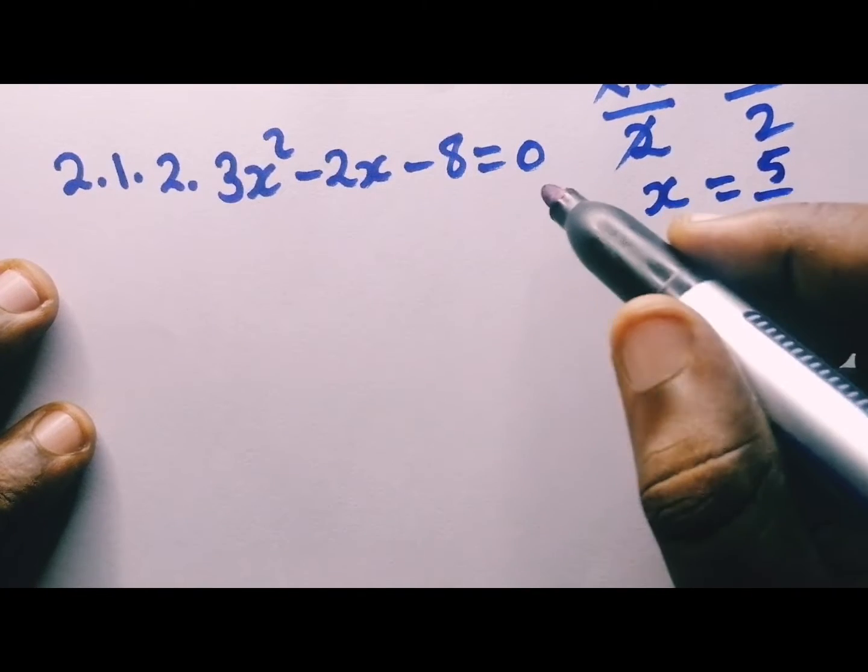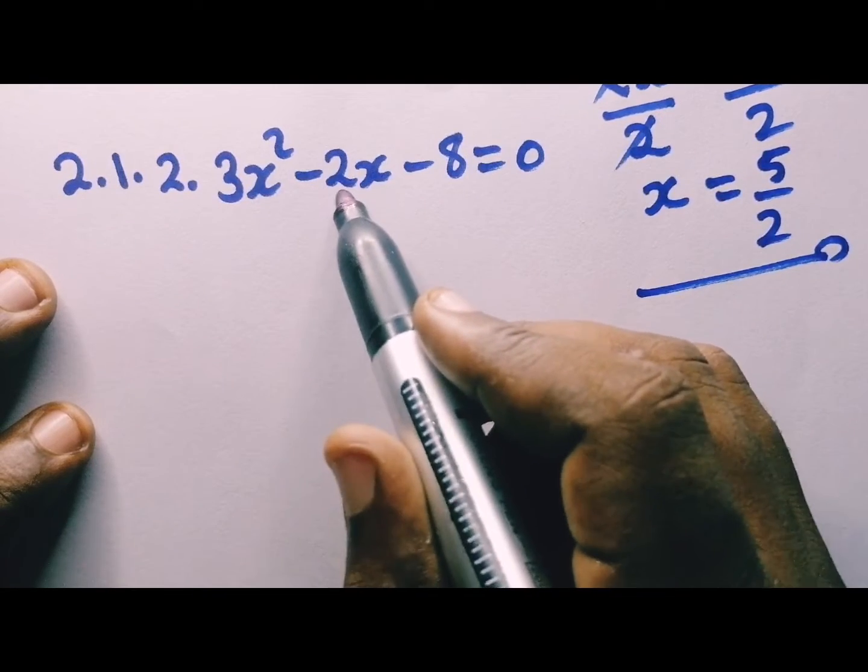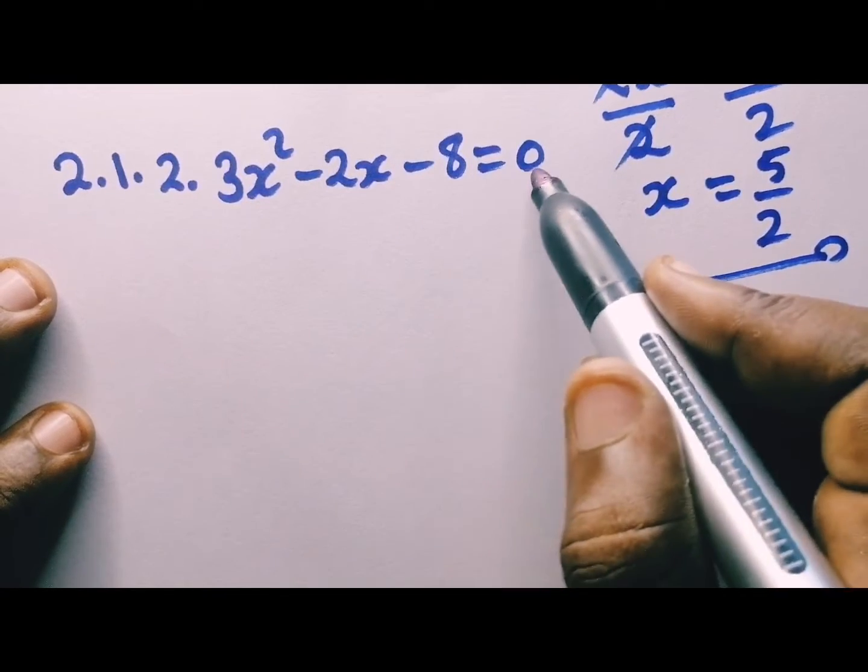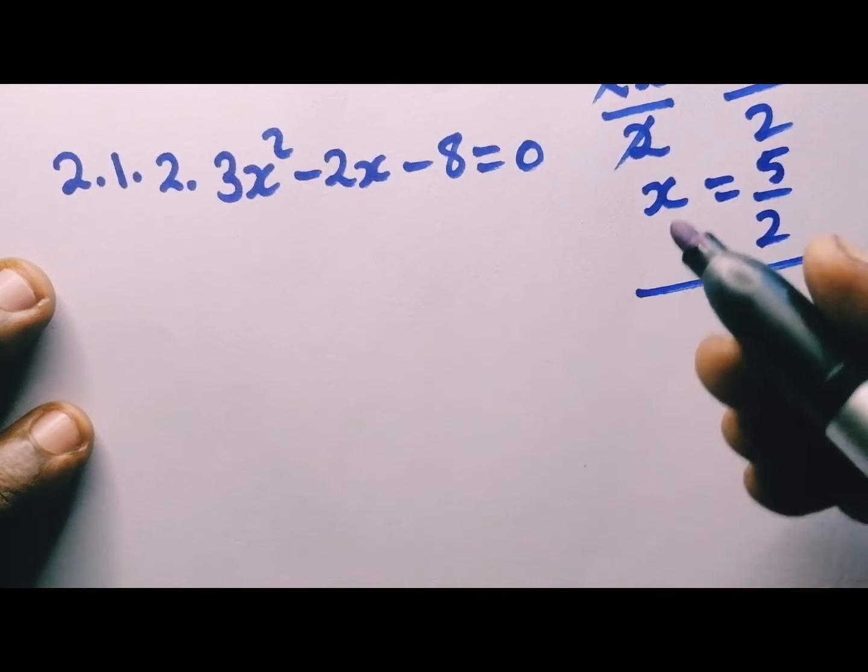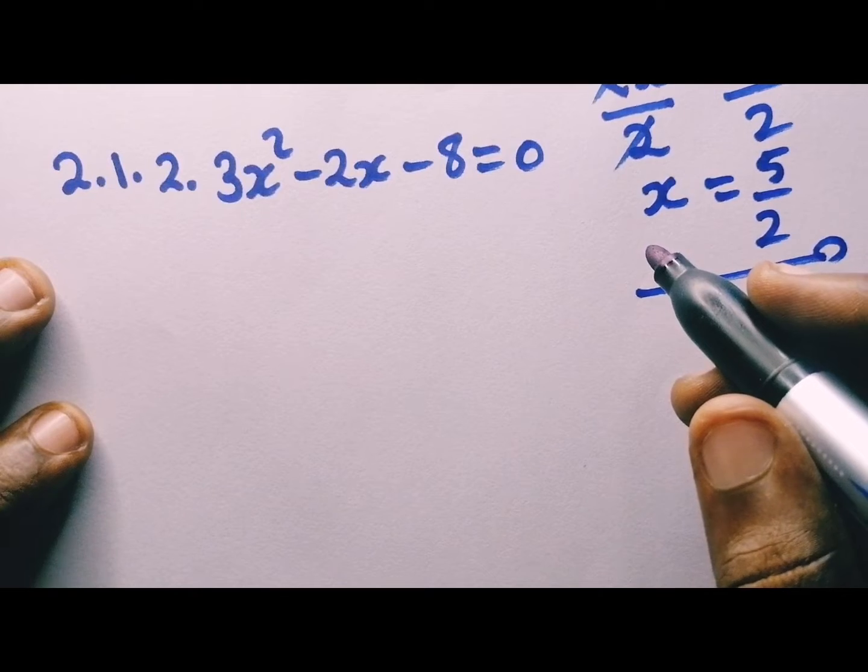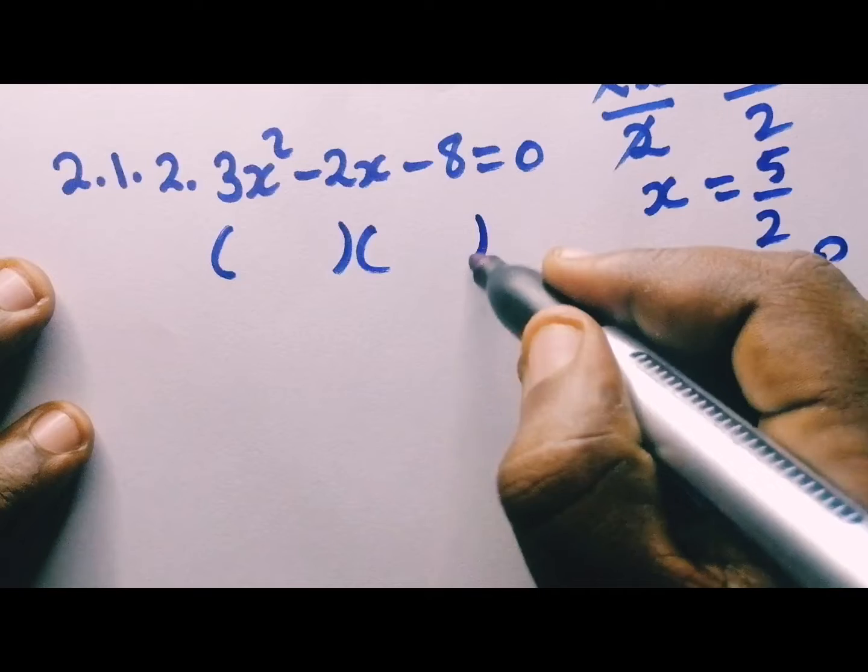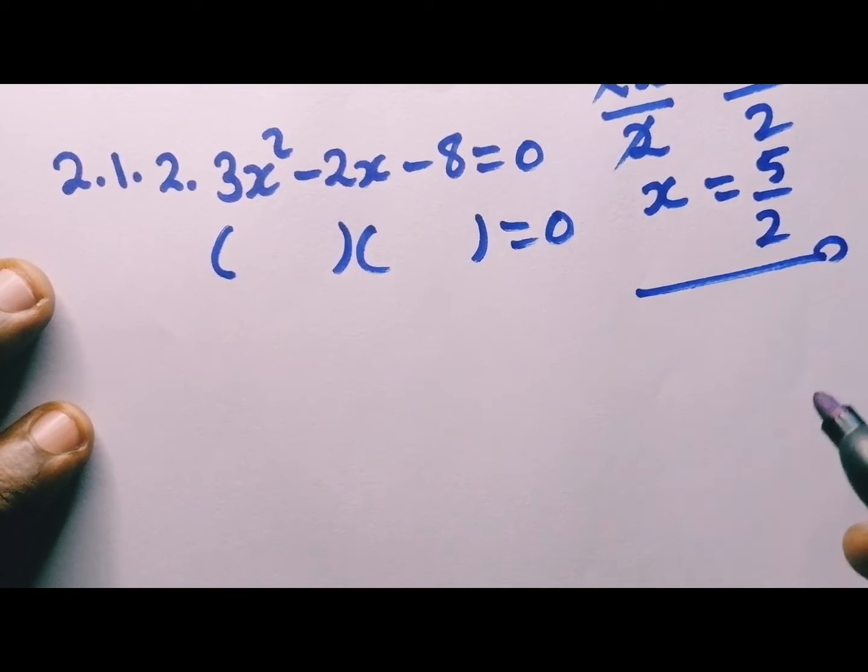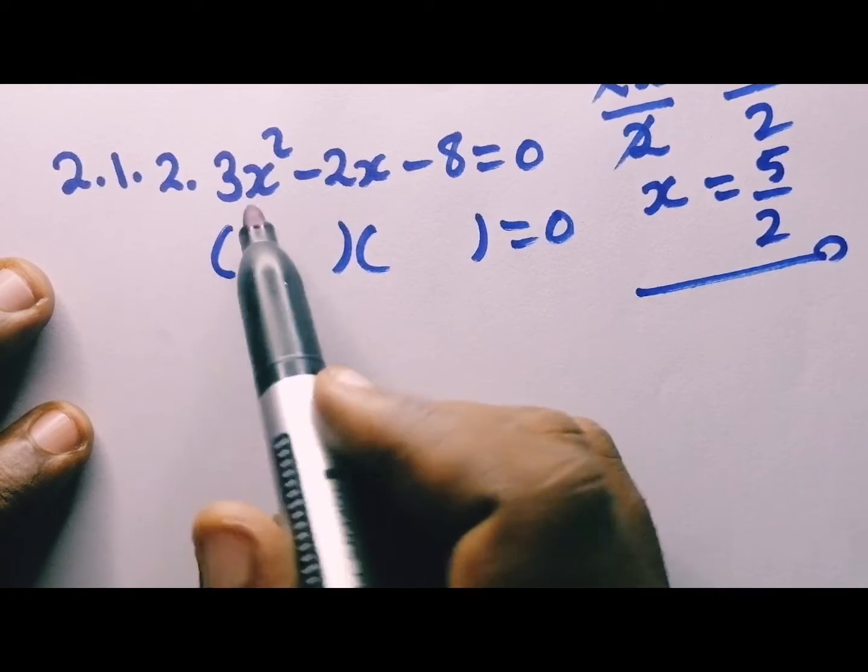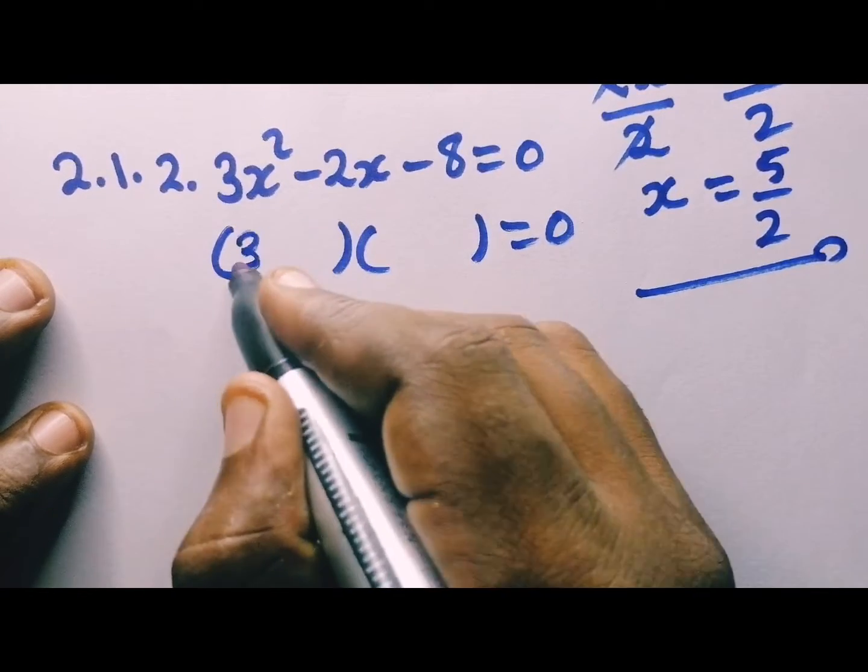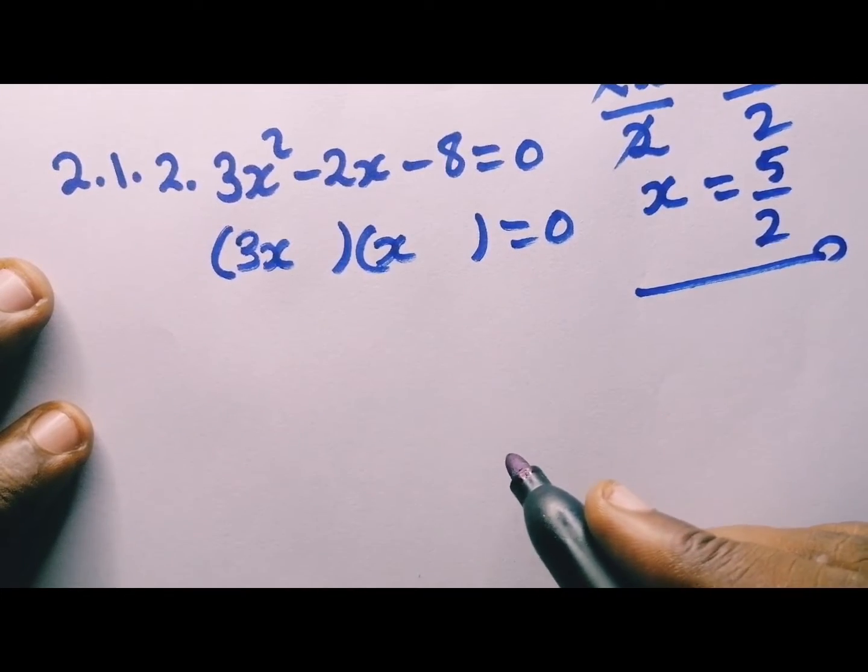So in this case, we have 3x squared minus 2x minus 8 equal to 0. So this is what we call quadratic standard form. In this case, you always open brackets. So if you have a number here, that number will go with x, the first x. And then we have this x.